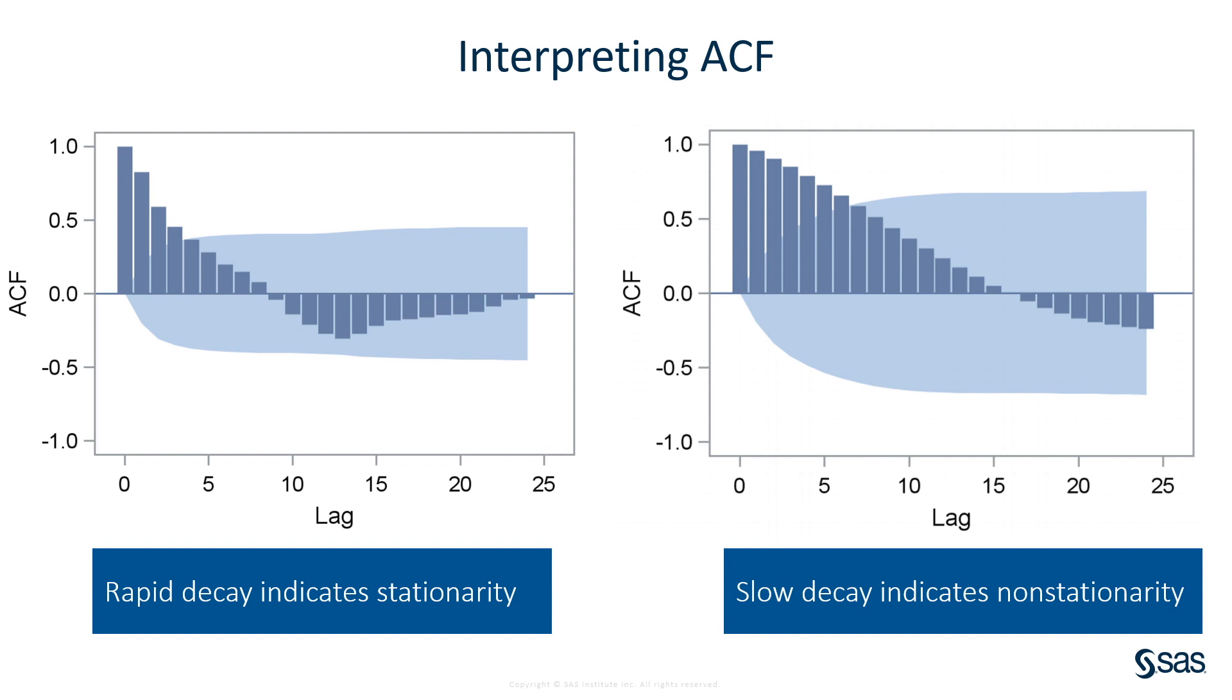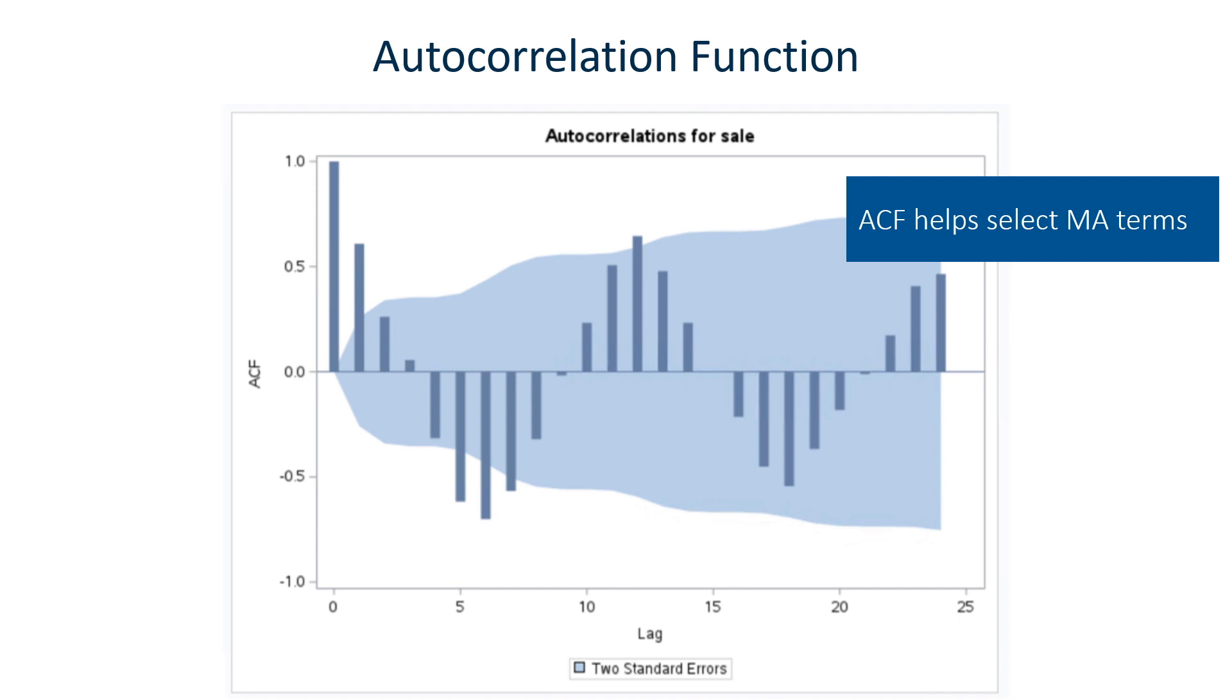If we have no significant lags, no meaning in this visual, no spikes outside of the blue shaded area, then we would know that the series is white noise and a model will not help us extract useful information. So here's a little rule of thumb. The autocorrelation function helps you diagnose moving average terms.